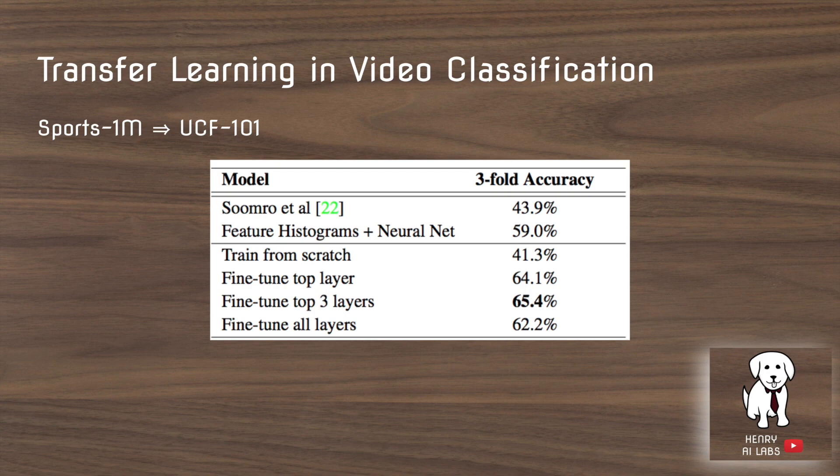They also test the effect of transfer learning from Sports-1 Million to UCF-101, fine-tuning on the 101 classes from the UCF dataset. This achieves a really good result.